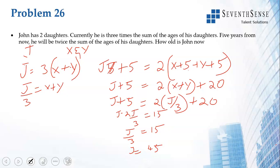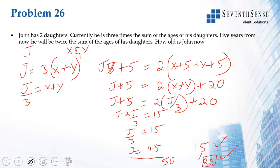Currently John is 45, and together his daughters are 15, since 3 × 15 = 45. Five years from now he will be 50 and his daughters' combined age will be 25 (each increases by 5, total increases by 10). 50 is indeed twice 25, so we have verified: John is 45 years old now.